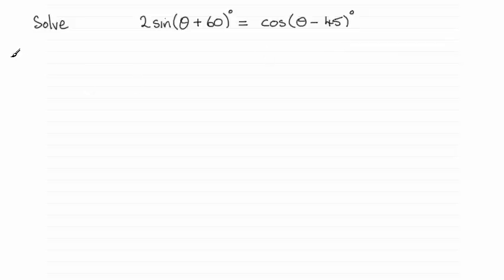For this one, we've got 2 multiplied by the expansion of sin(a + b), where a is θ and b is 60°. I'm assuming you're familiar with these addition formulae - if not, go back and check my earlier videos.